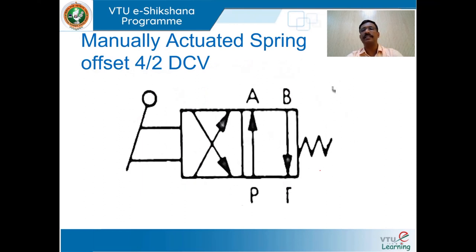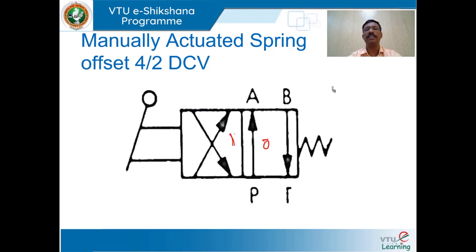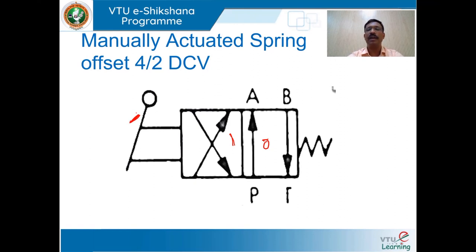We shall draw a symbol for a manually actuated spring-offset four-way two-position directional control valve. Two-position is denoted by two adjacent squares — position O and position 1. A lever is shown on one side and a spring on the other side. In the spring-offset mode, P is connected to A and B is connected to T.